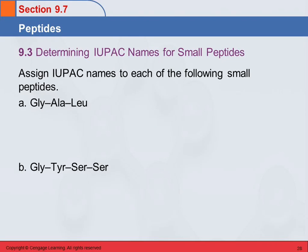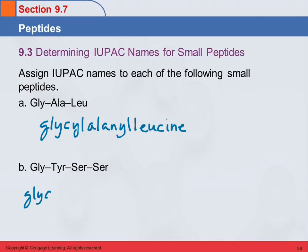Determining IUPAC names for small peptides. So assign names to each of the following small peptides. This first one is a tripeptide, it's got three. So GLY is the abbreviation for what? Glycine. So glycine becomes glycyl, and ALA is alanine, so alanyl, and LEU is leucine. Glycyl-alanyl-leucine. And you can end up with some funny looking combinations. We've got a double L in there and we've got this YCY business which looks kind of funny.